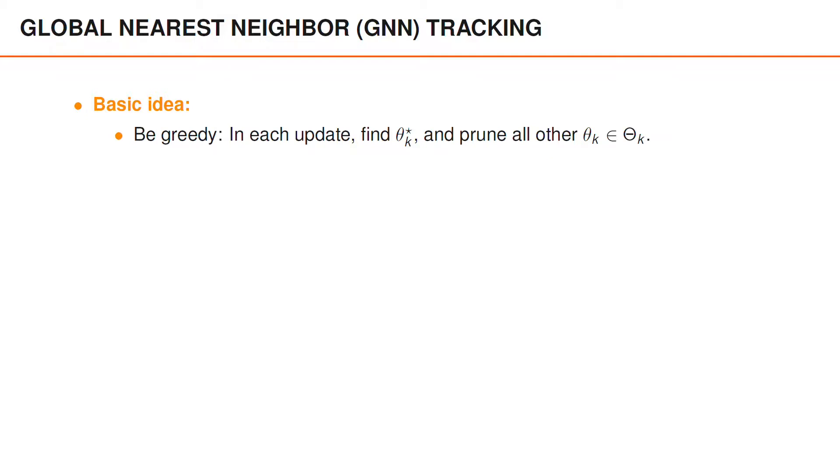The basic idea in GNN is to be greedy. In each update we find the optimal association theta star and we prune all other associations. A motivation for doing this is that taking just a single association will give us a computationally cheap algorithm, and the optimal association is the single best association we can choose.